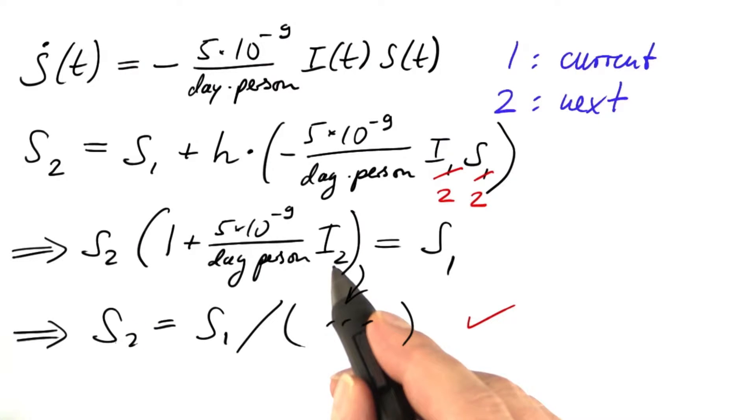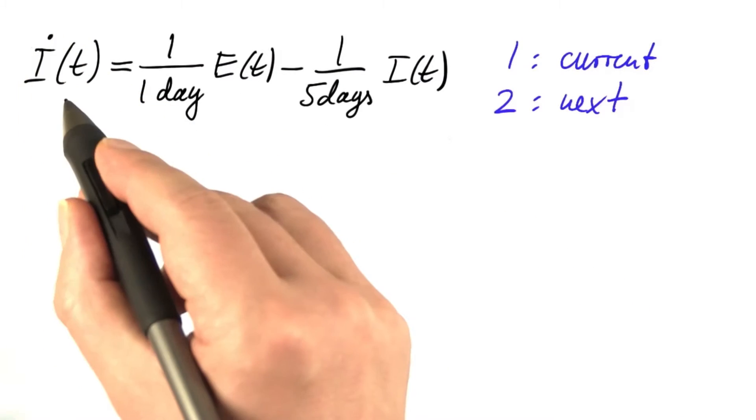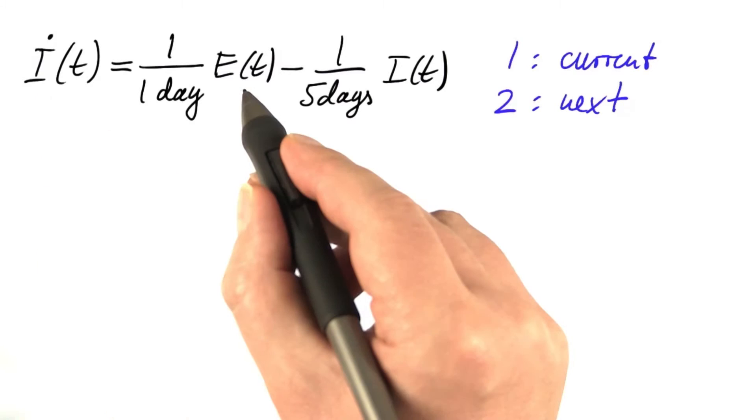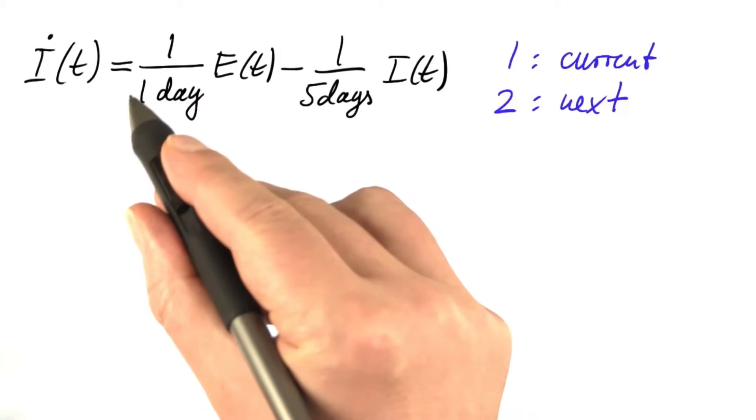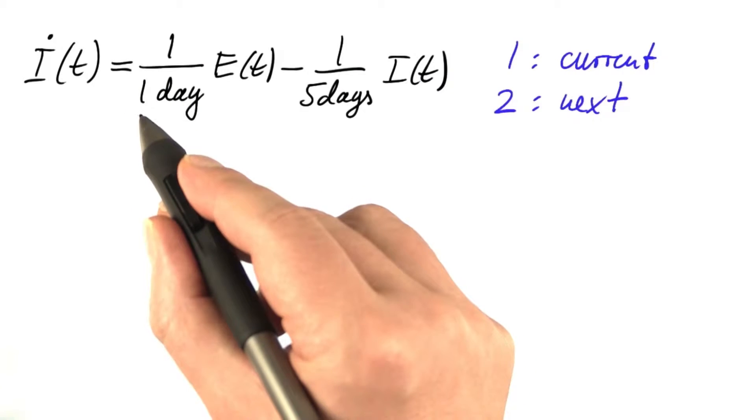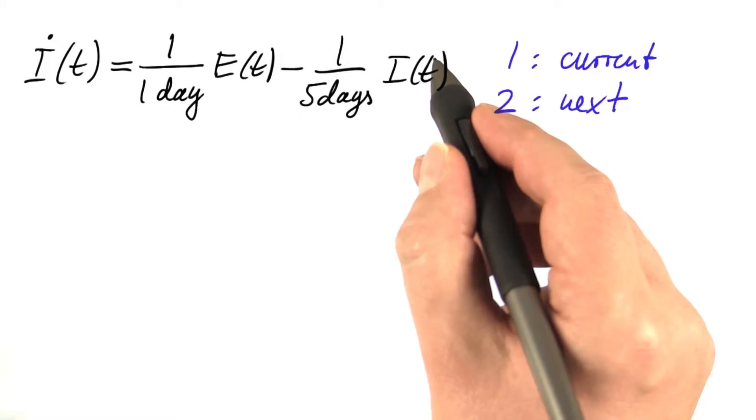And now the equation for the rate of change of i, the number of infectious persons. Exposed persons, that is infected persons, become infectious with a certain time constant and infectious persons recover with another time constant.